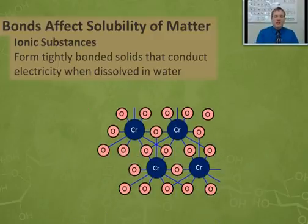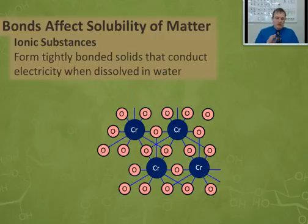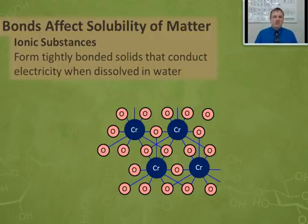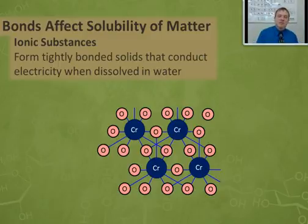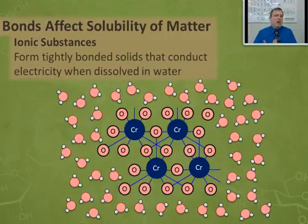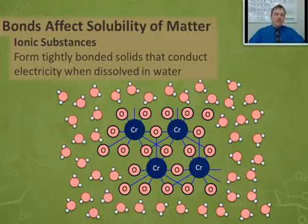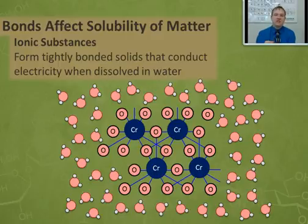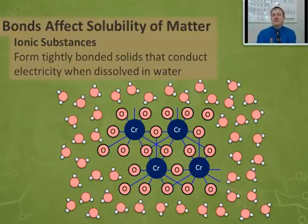Sometimes ionic substances don't dissolve. For example, chromium oxide: when chromium and oxygen form ions, chromium has a six-plus charge and oxygen has a two-minus charge. Those large-numbered ions pull together very, very tightly, so tightly that water molecules really can't get in — they just don't have the strength of attraction that the ionic substance does. So there are ionic substances that don't dissolve in water, but many ionic substances do dissolve in water, at least to an extent. When ionic substances dissolve in water, they always cause the water to become a conductor of electricity.